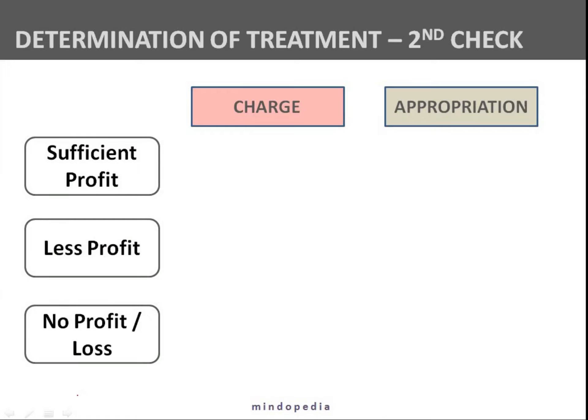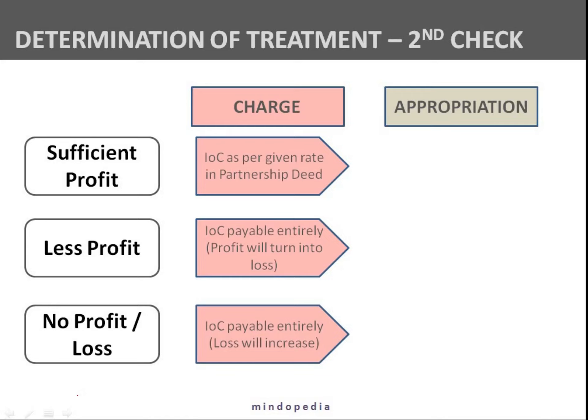We have to determine whether it's given as a charge or as an appropriation in the question. If it is a charge, it means whatever the condition of the profit of the firm, interest on capital is supposed to be given to the partner. In case of sufficient profit, there is no trouble — just give the interest on capital at the rate given in the question.